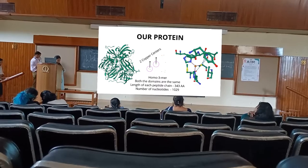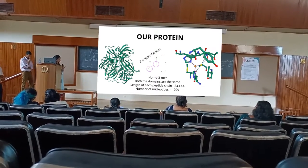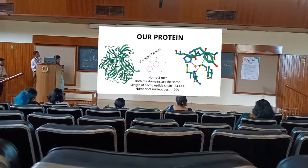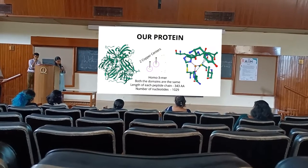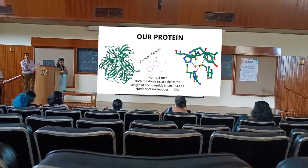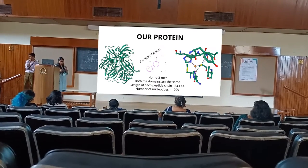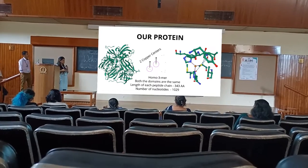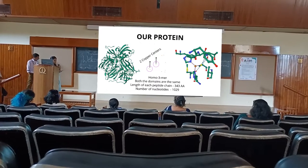Small laccase is a homotrimer — it has three subunits, and each subunit has two copper sites that are crucial for catalytic activity. The catalytic activity begins from the first copper site, the T1 copper site. The entire reaction is based on an oxidation-reduction reaction where small laccase oxidizes the tetracycline and in turn gets reduced in the process.